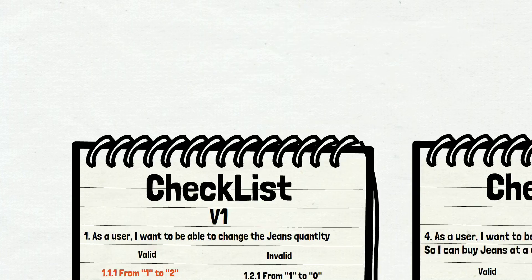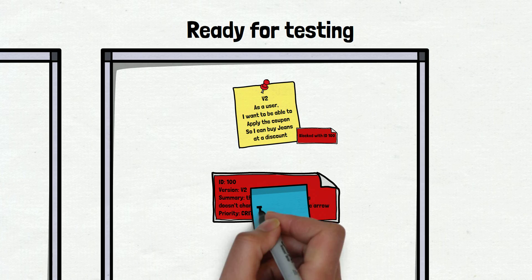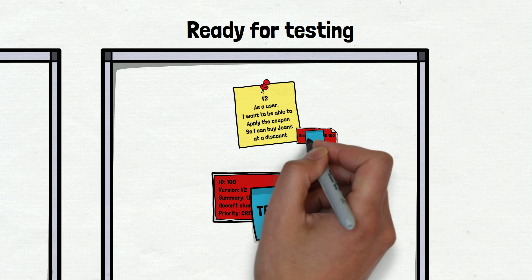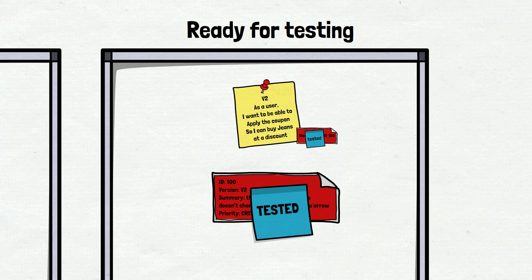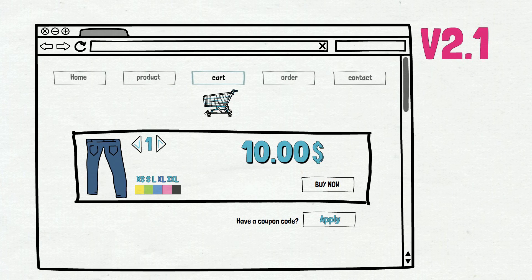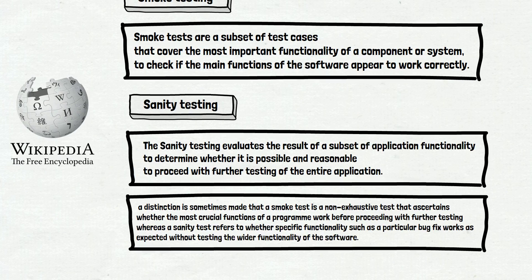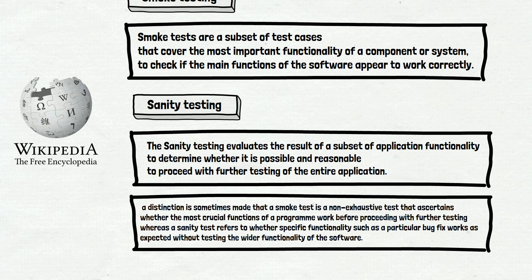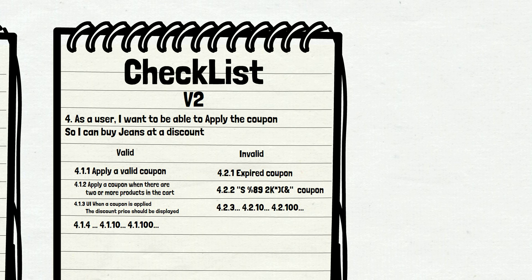We can continue. The first test case was actually the bug verification test, so the bug is verified and closed, meaning our user story is no longer blocked. Time to test the coupon functionality. We face the same problem again — where should we start? What type of coupon do we apply first? This time we need to start with sanity testing. The definition: sanity testing evaluates the result of a subset of application functionality to determine whether it is possible and reasonable to proceed with further testing. It means we need to start with a test case that checks the main basic functionality of the feature — in our case, applying a valid coupon. That is our sanity test case.